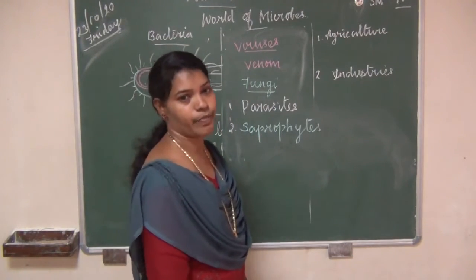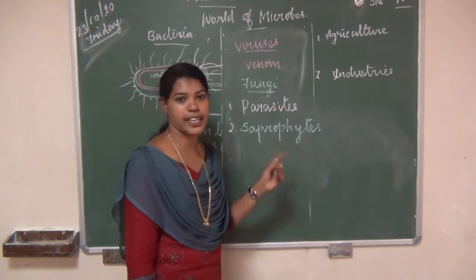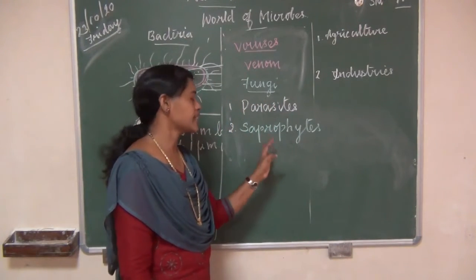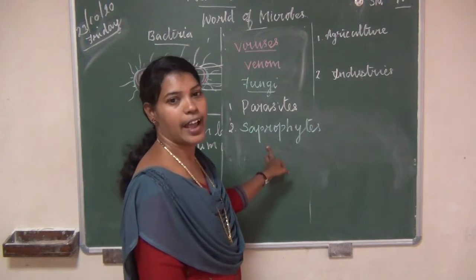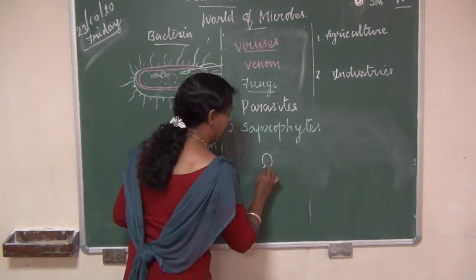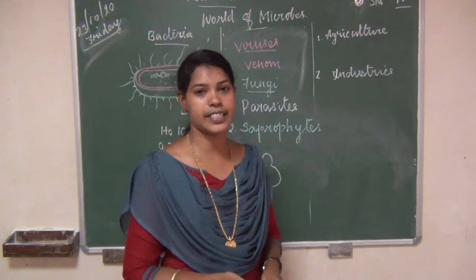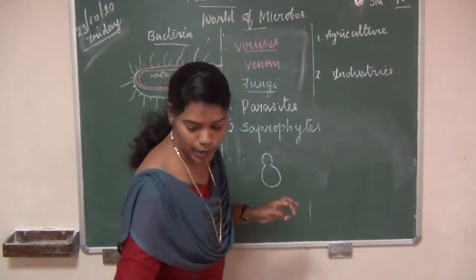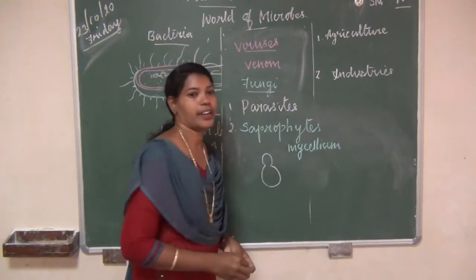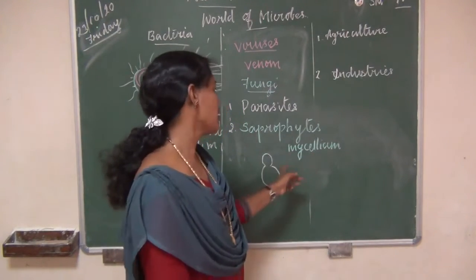Fungi are spherical in shape and non-motile — they cannot move from one place to another. The body of fungi is called thallus. In multicellular fungi, the body or thallus is called mycelium.